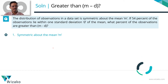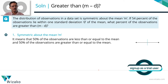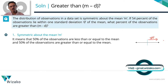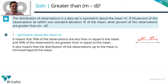The first thing it says is the distribution is symmetric about the mean. What do we mean by symmetric about the mean? Half the data points are less than or equal to the mean and another half are greater than or equal to the mean. So 50% of the observations will be mean or greater than the mean, and another 50% will be less than or equal to the mean. There's a second part: the distribution of observations up to the mean is mirrored beyond the mean.